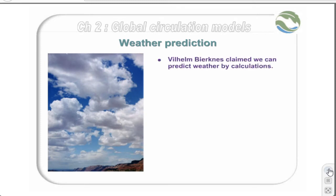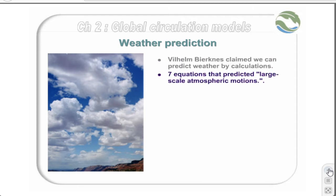Early in the 20th century, a Norwegian named Wilhelm Björknes claimed that atmospheric physics was advanced enough to forecast weather by calculation. He came up with seven equations that predicted large-scale atmospheric motions. Unfortunately, these equations did not provide fast-calculating methods, nor provide accurate forecasting techniques.